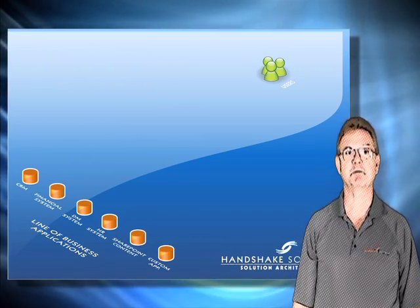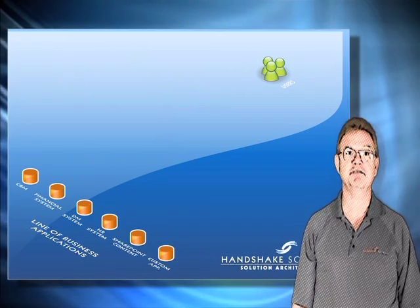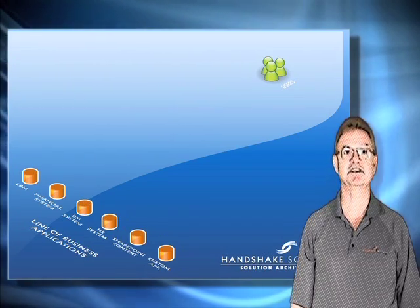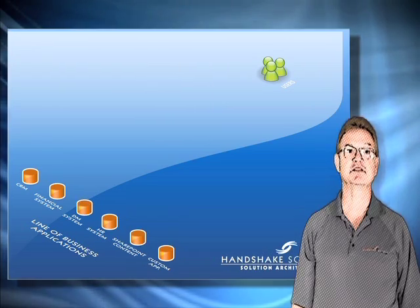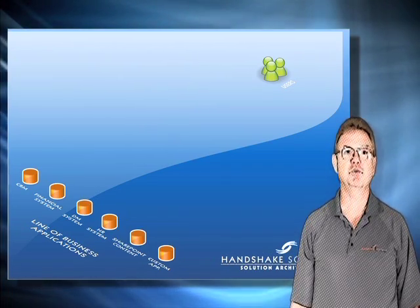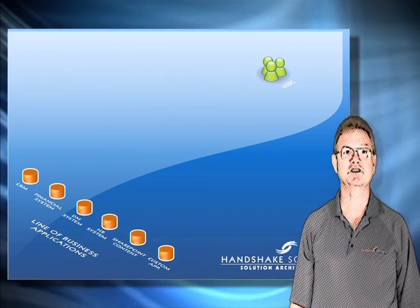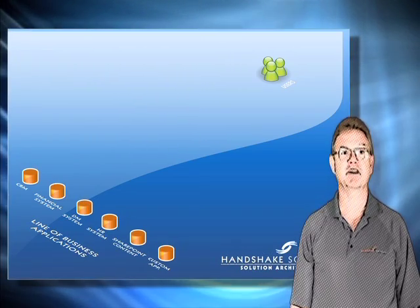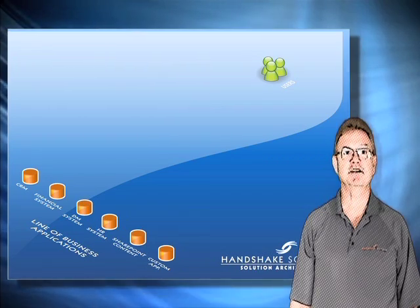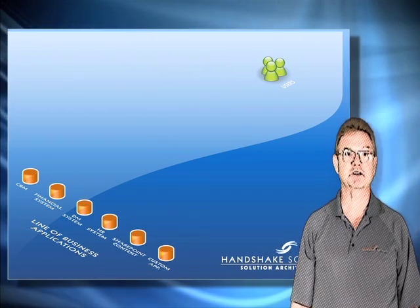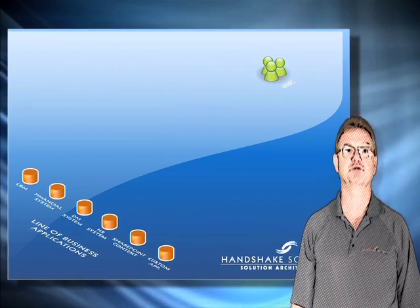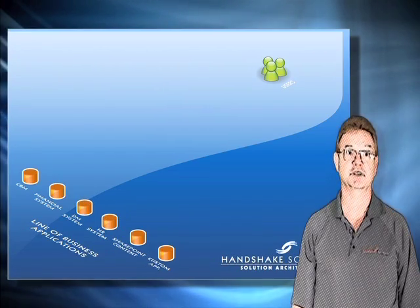Customer relationships are managed without the benefit of financial information. Document management systems work outside of standard collaboration environments. And portal content doesn't work within the line-of-business applications. Eliminating information stovepipes and mashing information together for users will greatly improve productivity in an organization.